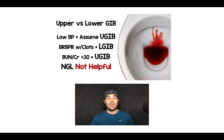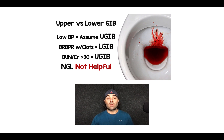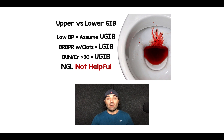So there you have it — upper versus lower GI bleed in patients presenting with bleeding. Low blood pressure: assume upper GI bleed. Bright red blood per rectum with clots: assume lower GI bleed. BUN to creatinine ratio greater than 30: assume upper GI bleed. NG lavage: not helpful.